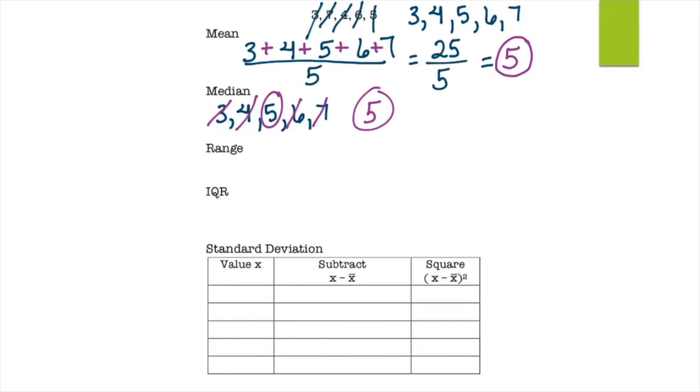For the range, the highest number minus the lowest number: 7 minus 3 equals 4.